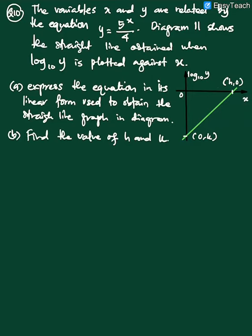Assalamualaikum. Hi. Okay, now I would like to share with you how to answer question number 10. The variables X and Y are related by the equation y equals 5 to the power of x over 4. The diagram 11 here shows the straight line obtained when log base 10 y is plotted against x. So this is the diagram 11 here.